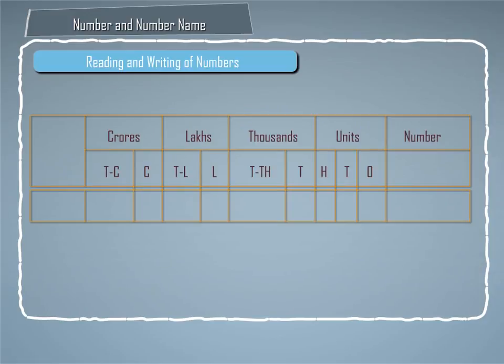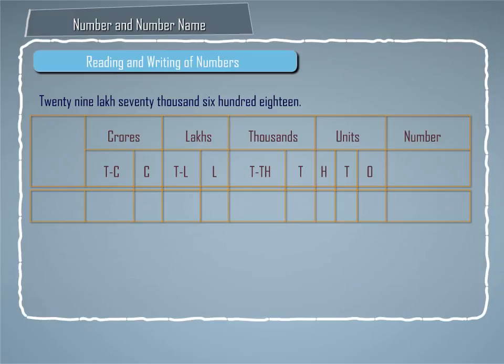Now let us understand how we can write numbers in figures using a place value table. Let us write the number 29,70,618 into figures using the place value table, and we write the number in the place value table as follows.